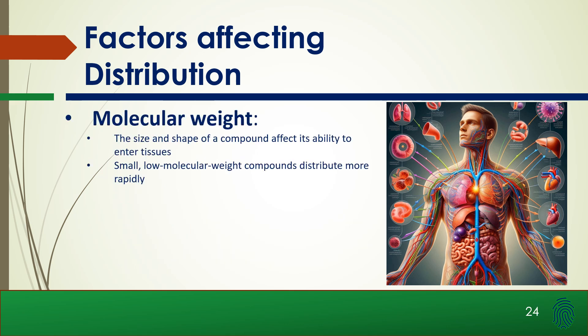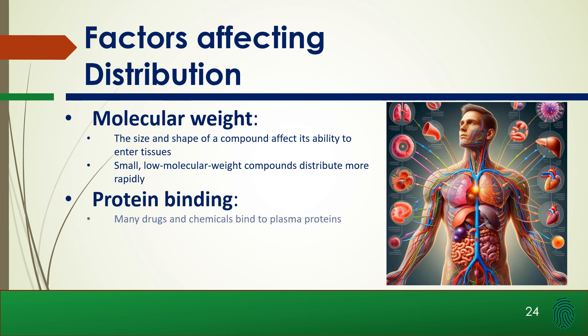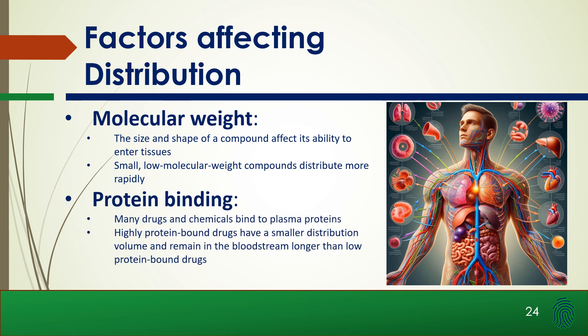Molecular weight also affects distribution — small, lower molecular weight compounds distribute more rapidly. And protein binding: many drugs and chemicals bind to plasma proteins. Highly protein-bound drugs have smaller distribution volumes and remain in the bloodstream longer than low protein-bound drugs.